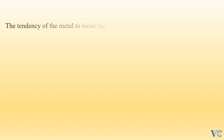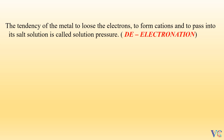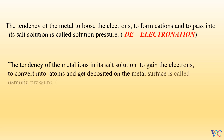The tendency of the metal to lose electrons to form cations and to pass into its salt solution is called solution pressure. The tendency of metal ions in its salt solution to gain electrons, convert into atoms, and get deposited on the metal surface is called osmotic pressure.